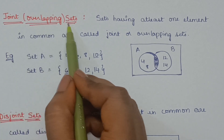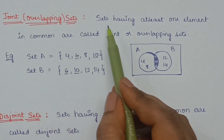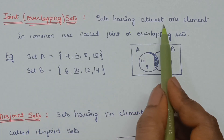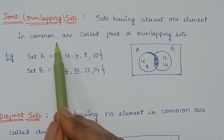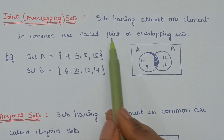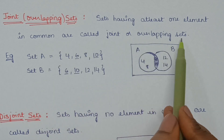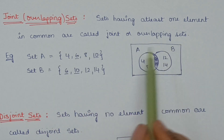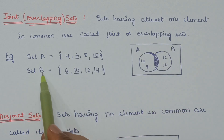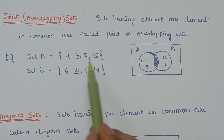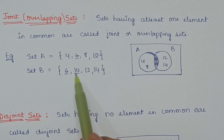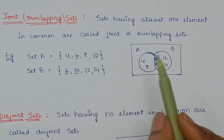Joint or overlapping sets. Sets having at least one element in common are called joint or overlapping sets. For the given two sets, 6 and 10 are in common, so these two sets are called joint sets.